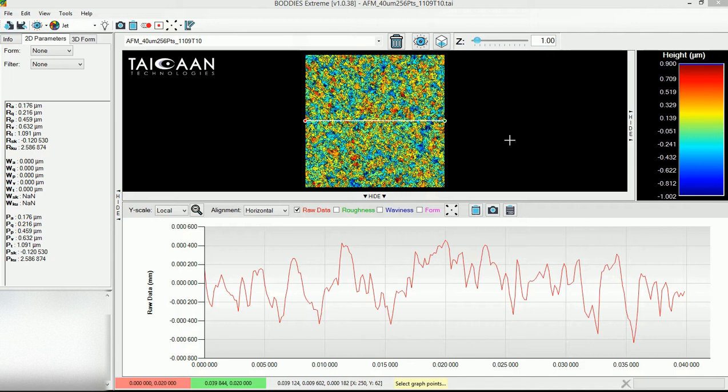In the image space we have the AFM data with the cross-section and I've expanded the cross-section view here so that you can see that in more detail for the purposes of this talk.